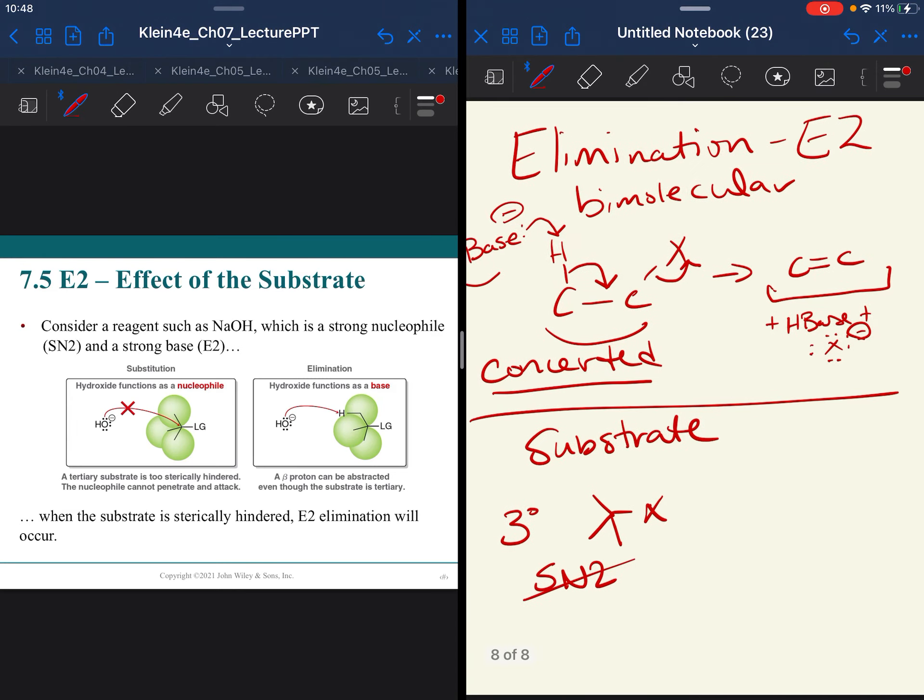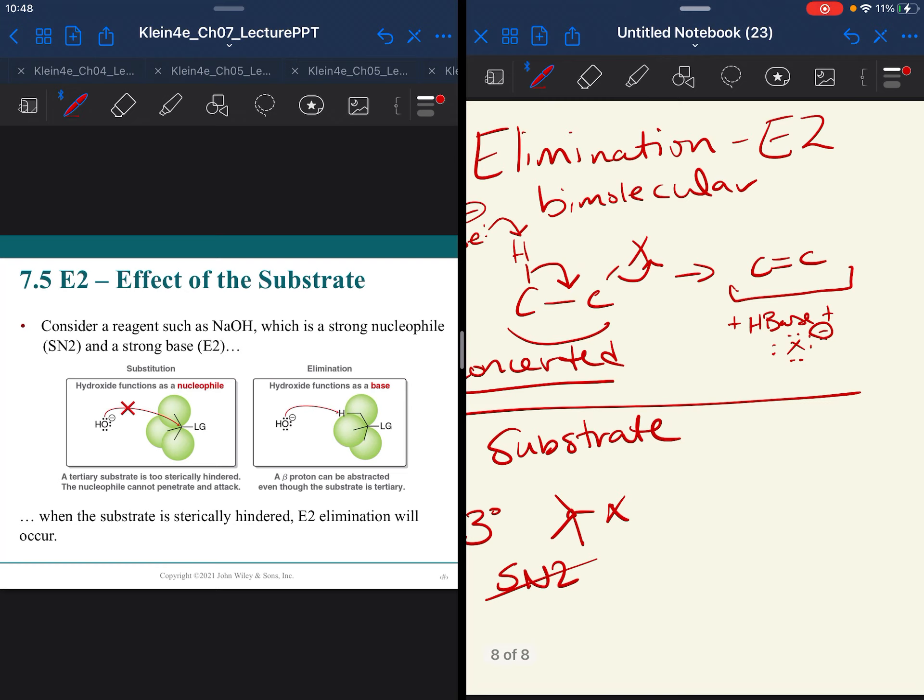And that's because your nucleophile couldn't get to this hindered carbon. Well, protons on the alpha carbon tend to be sticking out more on the outside of the molecule.